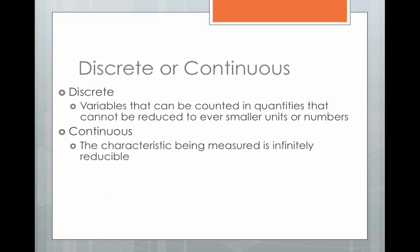One last thing to talk about is whether a variable is discrete or continuous. This applies to our numeric level variables. A discrete variable is a variable that can be counted in quantities that cannot be reduced to ever smaller units or numbers — it can't be divided, you can't have halves or pieces of the whole. An example of a discrete variable would be number of brothers and sisters, because you can't have half a brother or sister. You either have one or you don't. Those numbers — one, two, three — are discrete; there's no line that connects them.